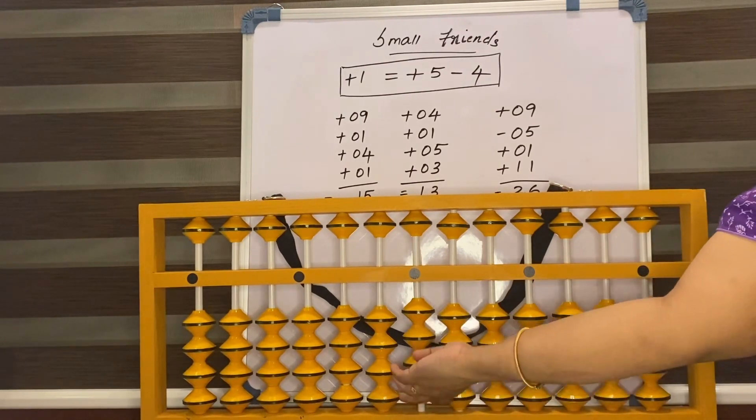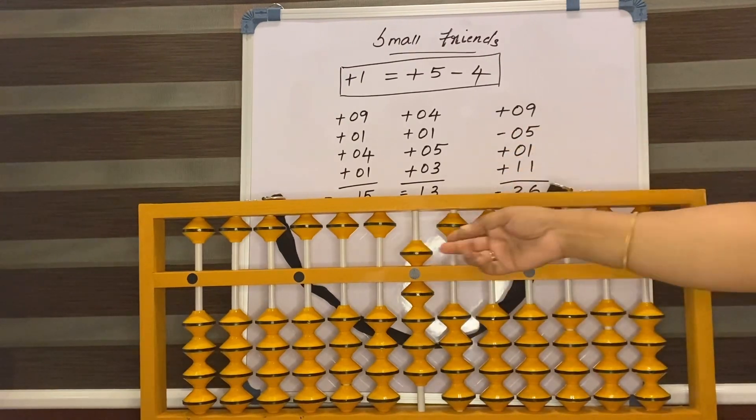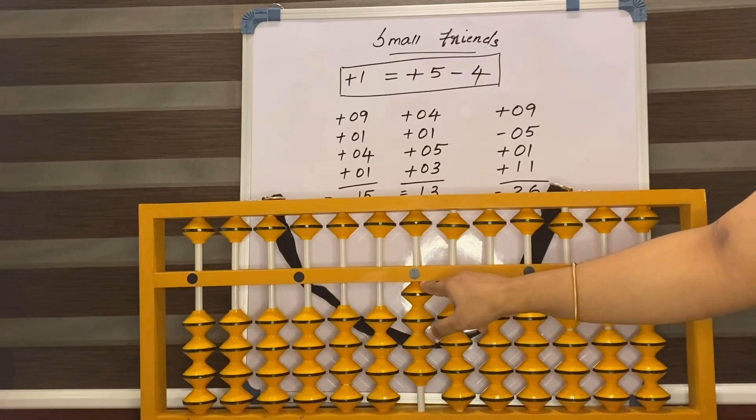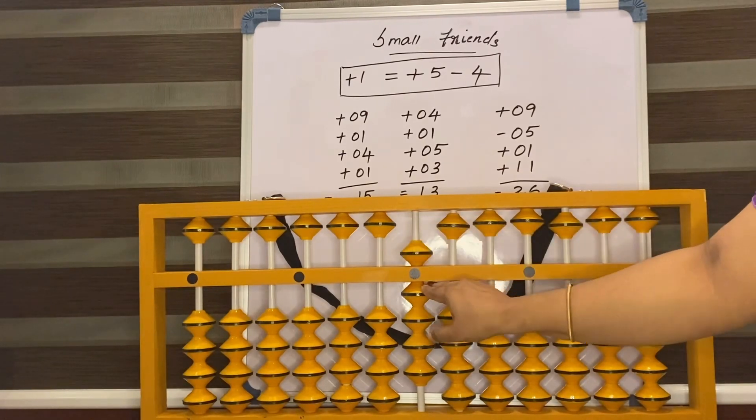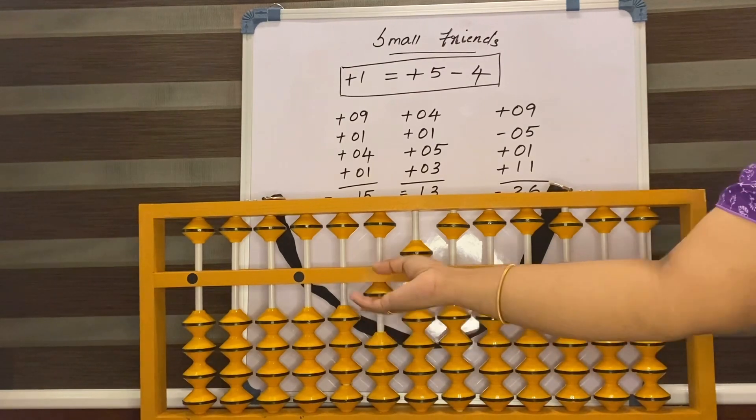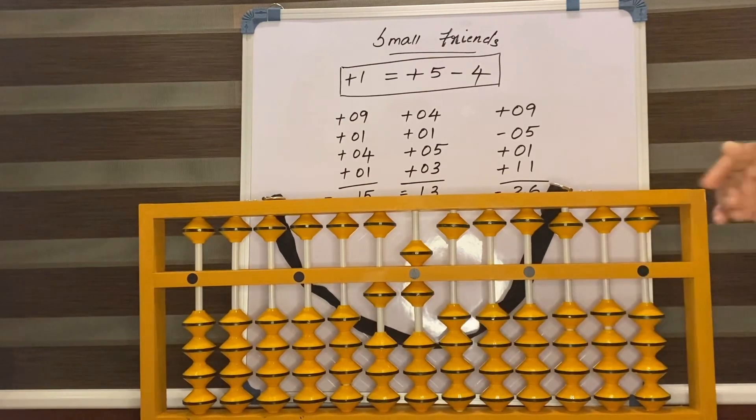9, less 5, 1. How to add 1? Add 5 less 4. 11. Answer is 16.